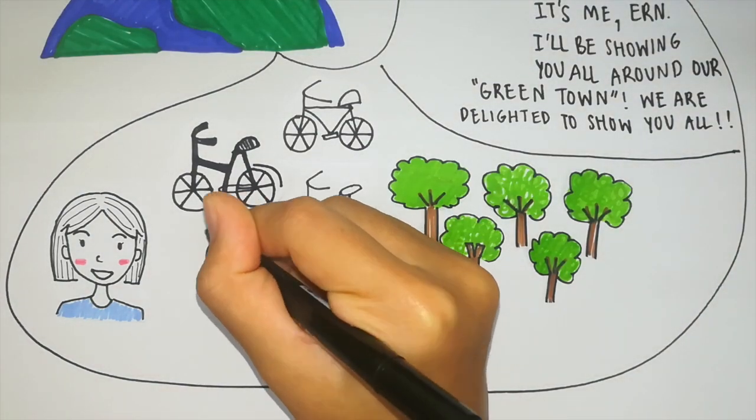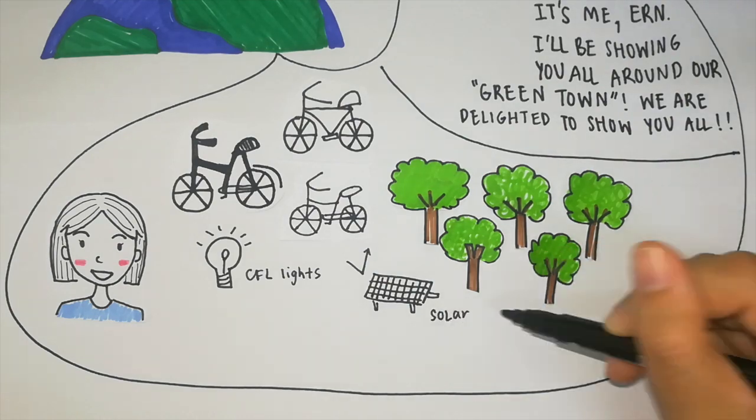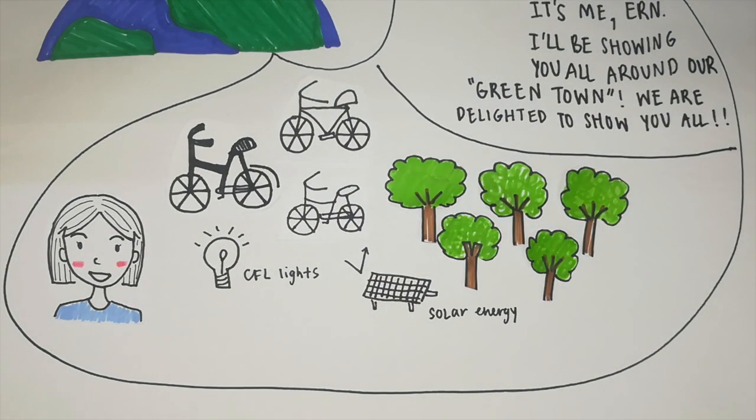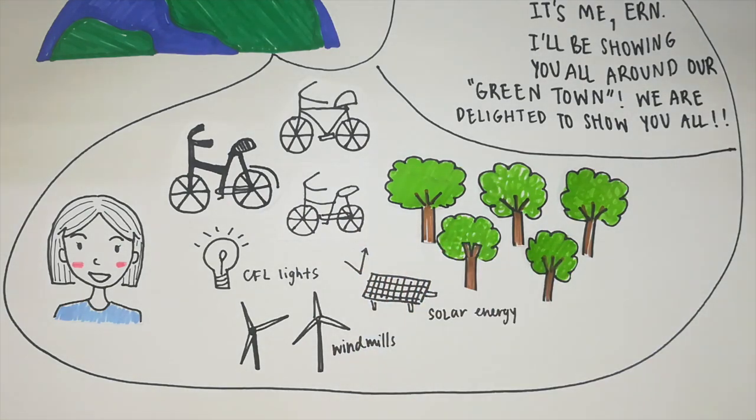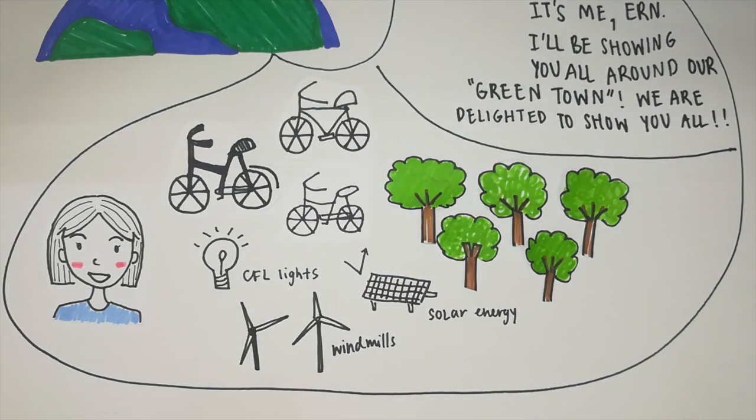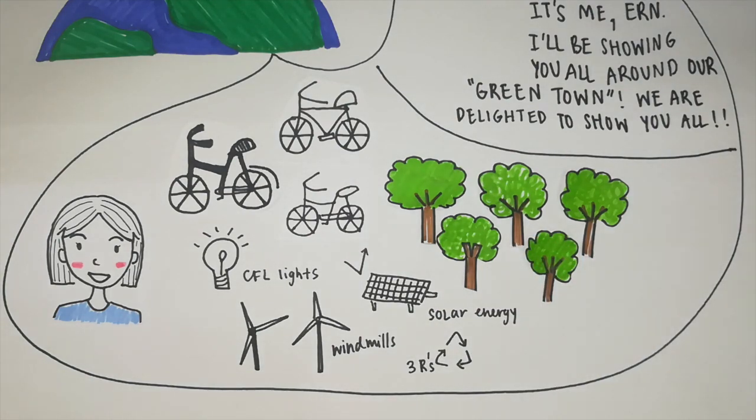We could plant more trees, conserve energy, for example transporting by using bicycle or walking if it's not a long distance instead of using cars. And also you could use public transportation to reduce the amount of pollution.